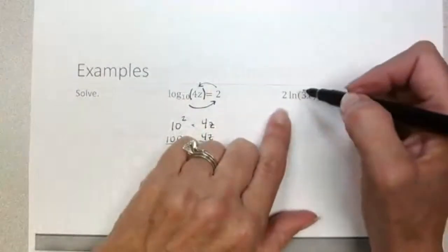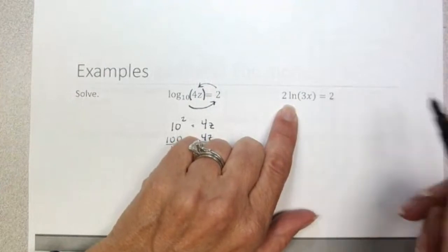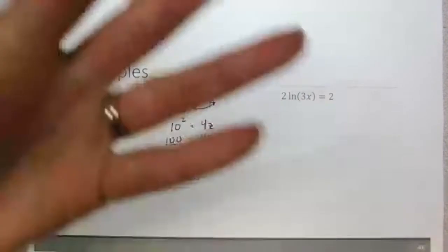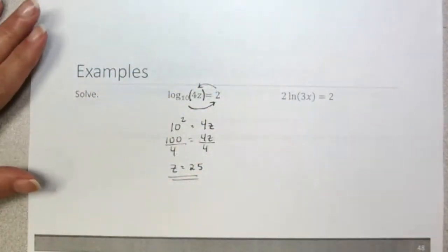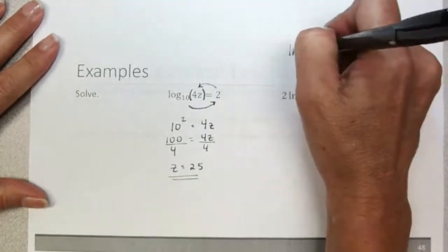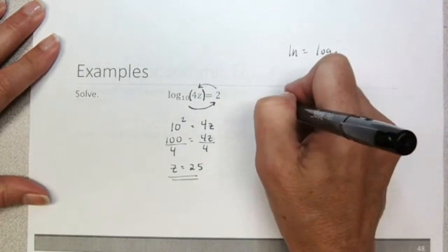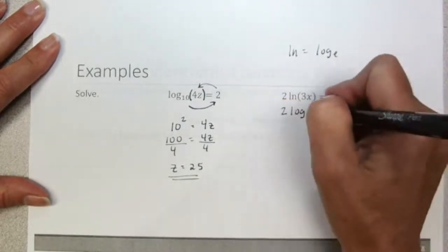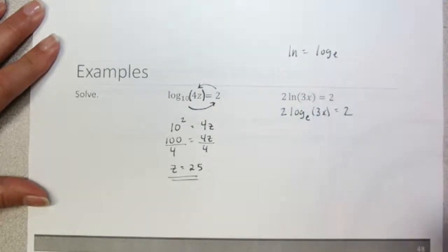Here's another example: 2 times the natural log of 3x is equal to 2. There's no visible base, but the natural log is log base e. So we rewrite this as 2 times the log base e of 3x, and that's going to be equal to 2.